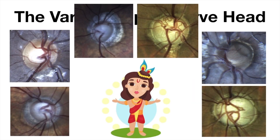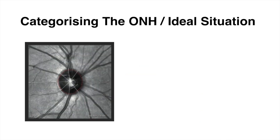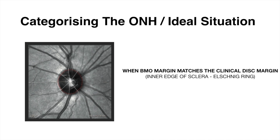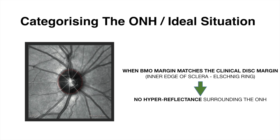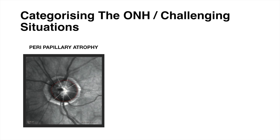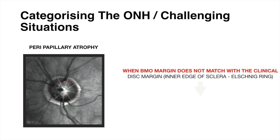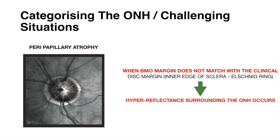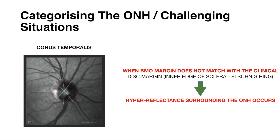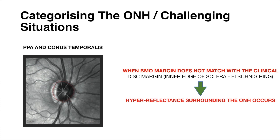Different persons will have different optic nerve heads, making categorization challenging. Ideally, the BMO margin matches the clinical disc margin, so there will be no hyperreflectance surrounding the optic nerve head in OCT. In challenging situations where the BMO margin does not match the clinical disc margin, hyperreflectance occurs — for example in peripapillary atrophy, conus temporalis, or PPA with conus temporalis. The alpha zone is where Bruch's membrane and RPE are present; the beta zone is where only Bruch's membrane is present; the gamma zone is where neither Bruch's membrane nor RPE is present.